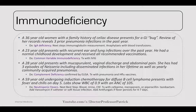Anaphylaxis with blood transfusion is a feared complication here. The next case is a 23-year-old who presents with recurrent ear and lung infections over the past year. He had normal childhood development and received all recommended vaccinations. The diagnosis would be common variable immunodeficiency, and you can treat this with IVIG. It commonly presents between 18 and 25.